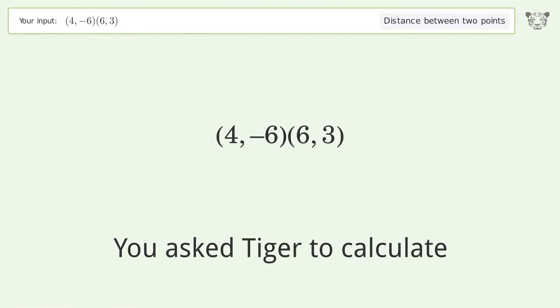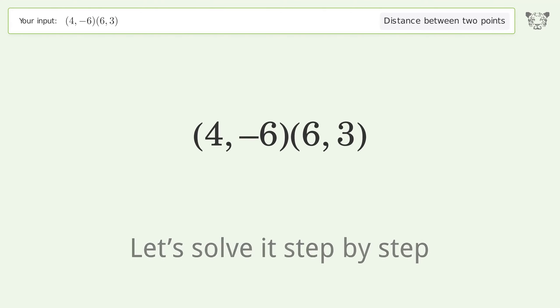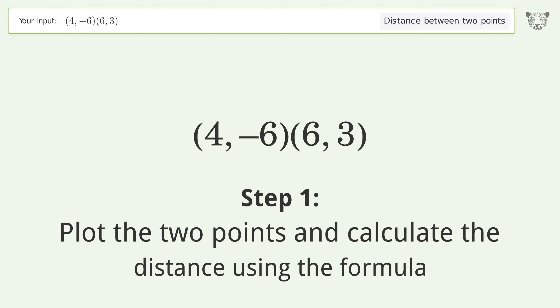You asked to calculate the distance between two points. The distance between the two points is the square root of 85, or 9.22. Let's solve it step by step. Plot the two points and calculate the distance using the formula.